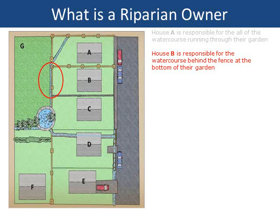Surely that's not their responsibility? If it runs adjacent to your land, and even if it does not fall inside your property boundary as set out by your title deeds — for example if it's the other side of a fence, wall or hedge — then you are likely to be responsible for the maintenance of the watercourse bank on your side, to halfway across the bottom of the watercourse.